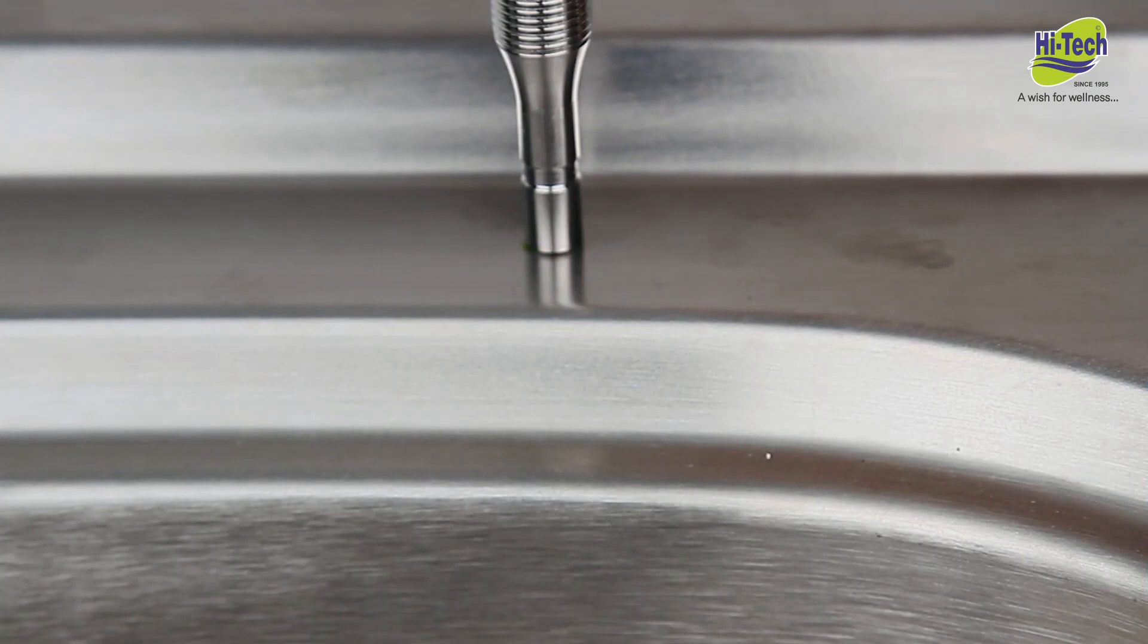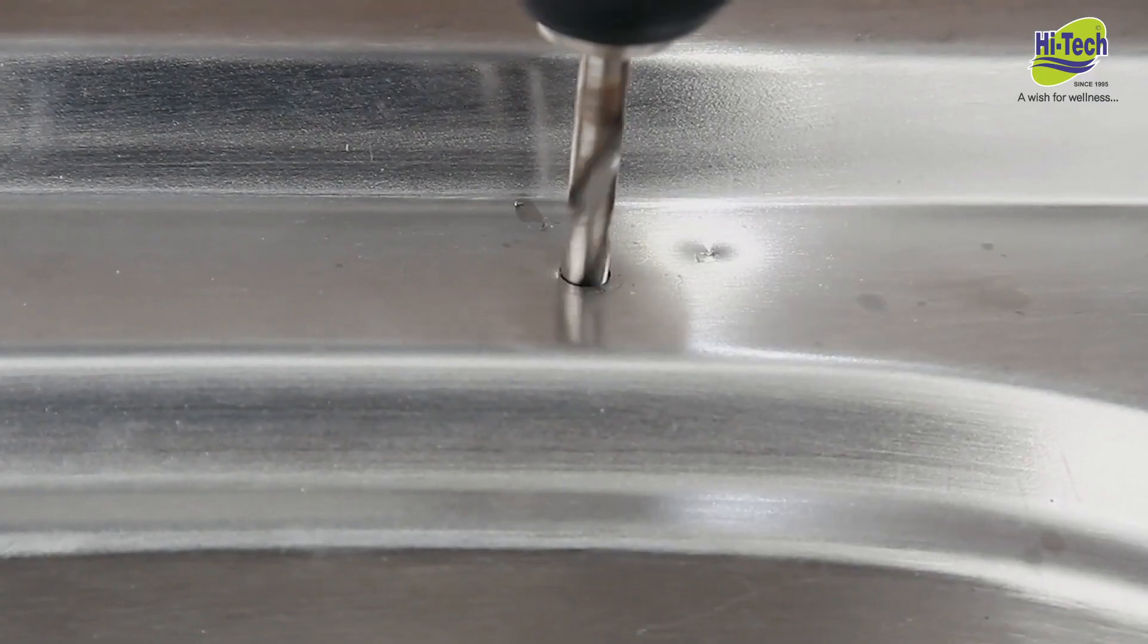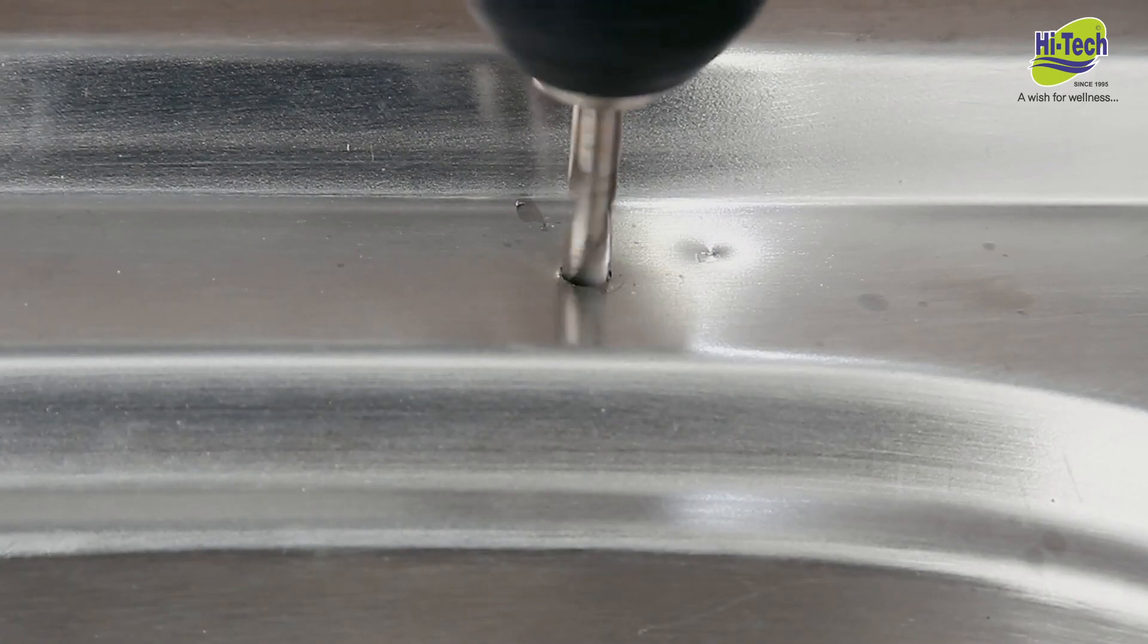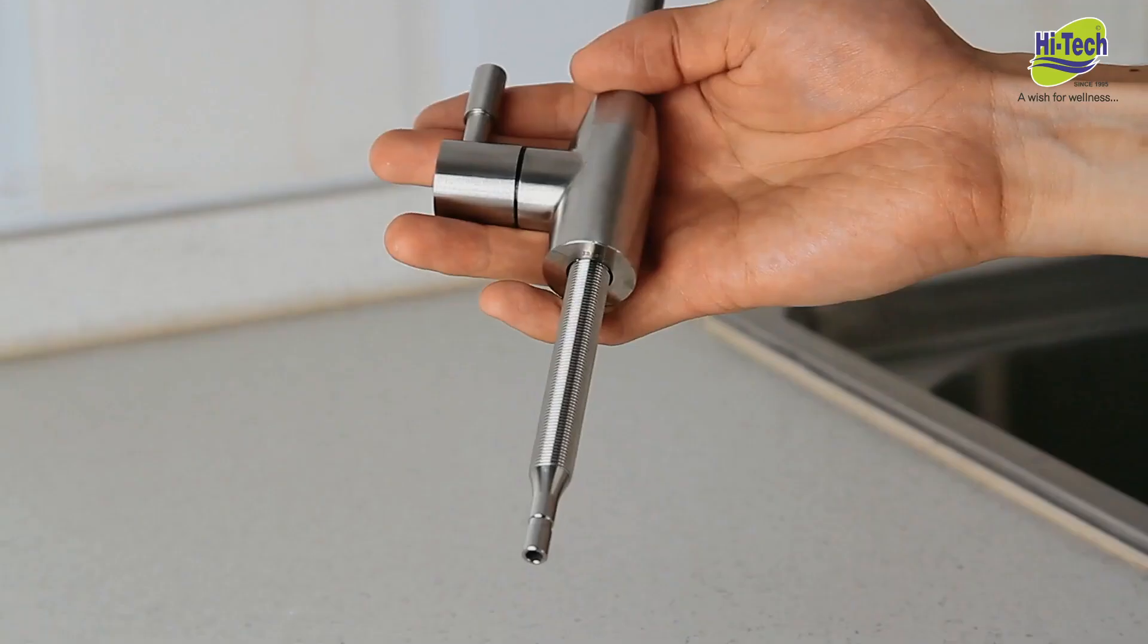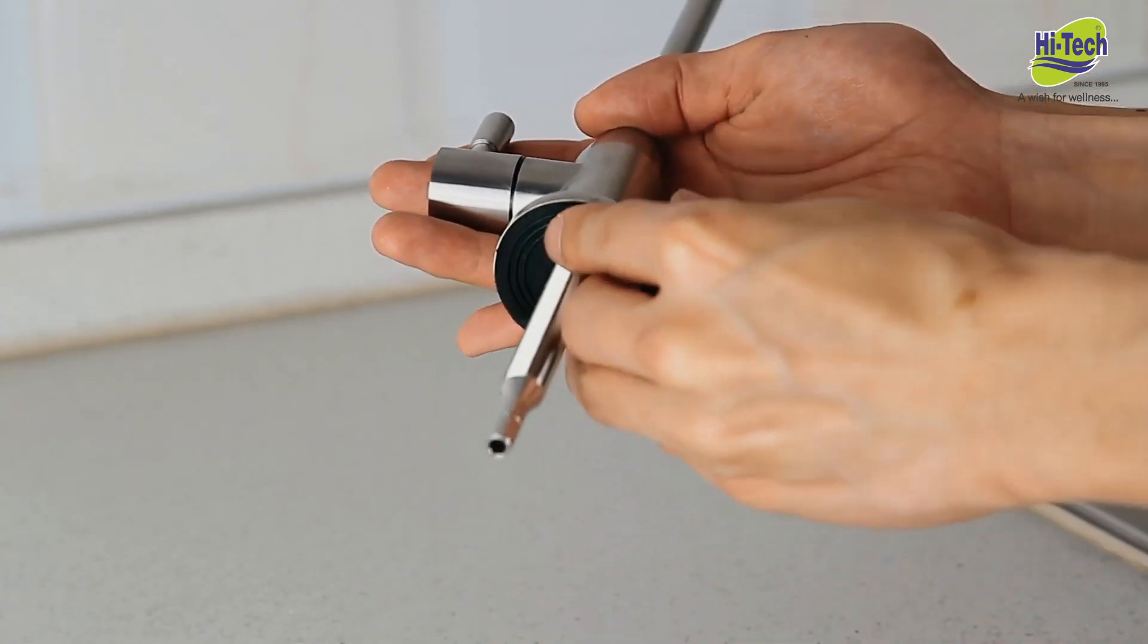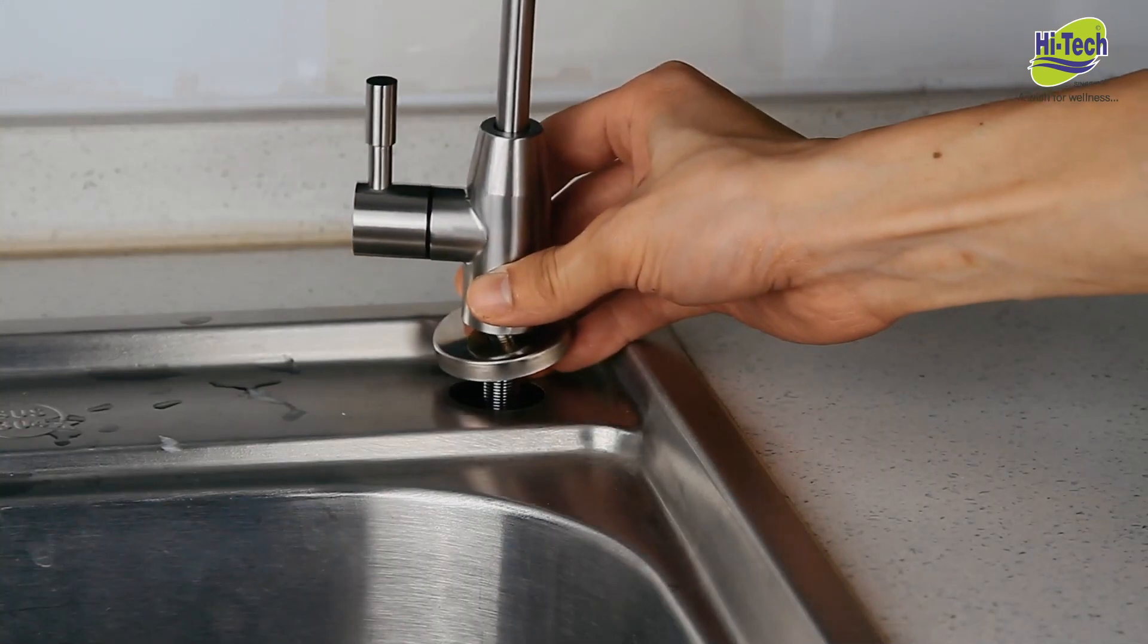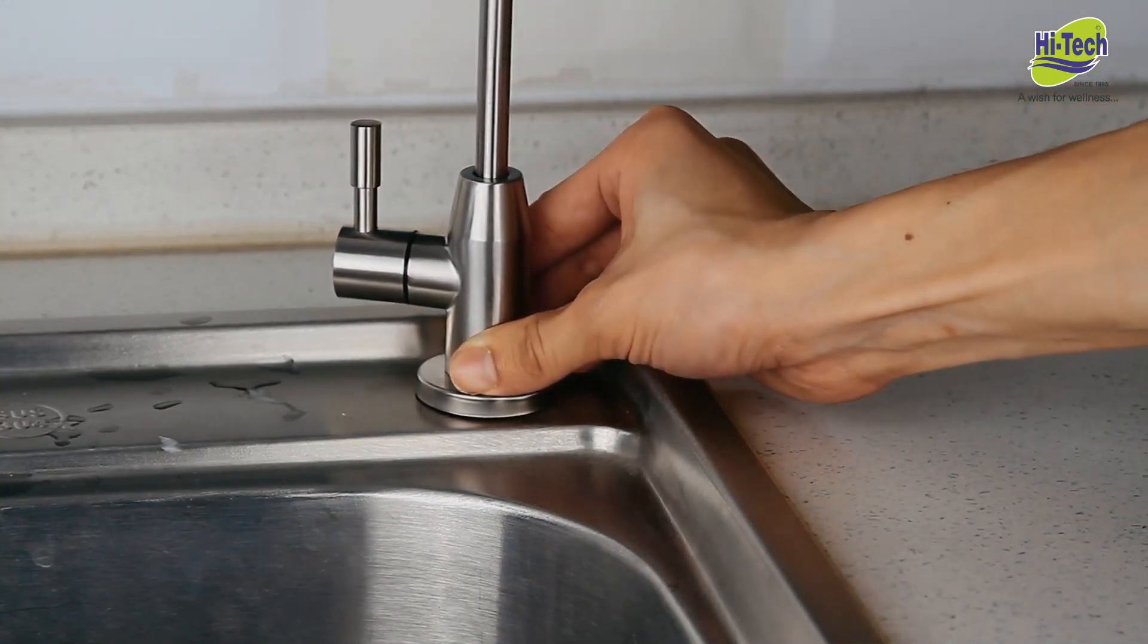Make sure you have an existing hole available on the counter. If not, please refer to another video on our channel to drill a hole on the counter. First, take out the upper cap and mounting washer from the accessory pack. Screw them to the faucet rod. Then insert the rod into the hole on the counter.